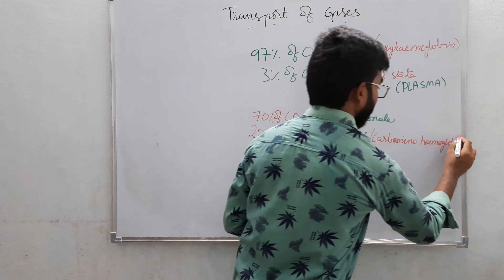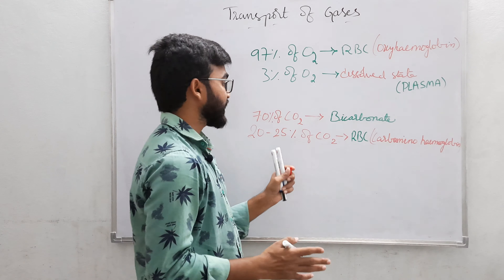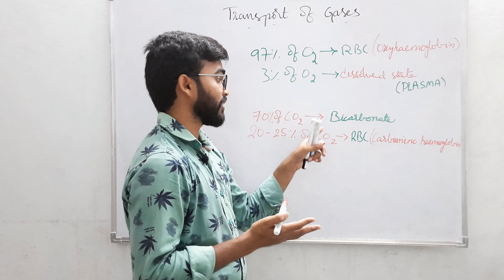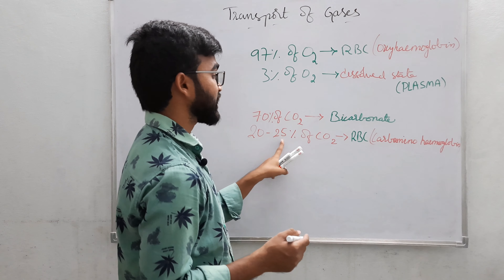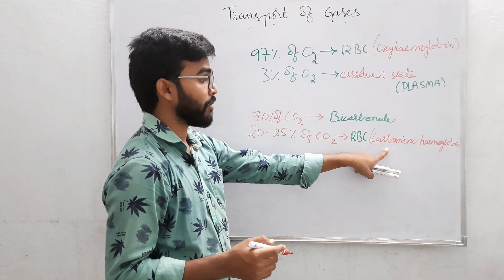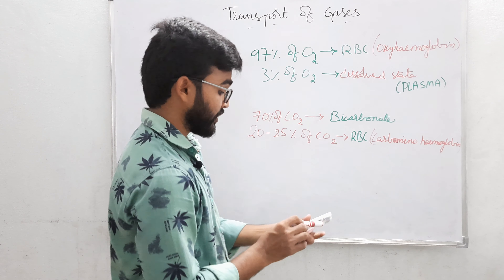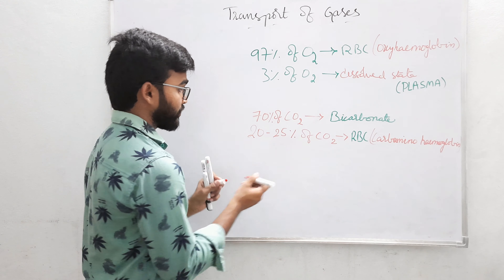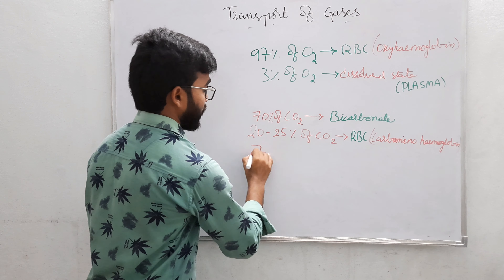About 70% of carbon dioxide is carried out in the form of bicarbonates, and 20 to 25% through RBC.